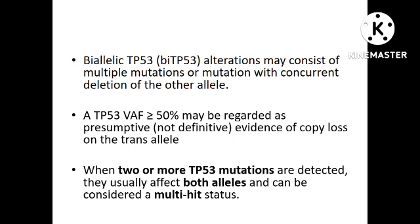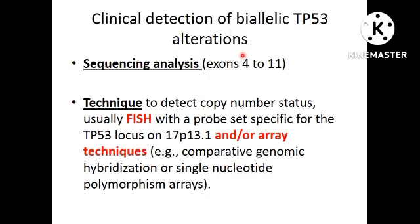To detect biallelic TP53 alterations, you need to cover exons 4 to 11 of TP53 by NGS, and another technique to detect copy number status — such as FISH with a probe set specific for the TP53 locus and 17p, or array techniques like comparative genomic hybridization or SNP arrays. This is because copy number loss and large deletions cannot be picked up by NGS, so you need additional techniques to demonstrate TP53 deletion or allele loss.